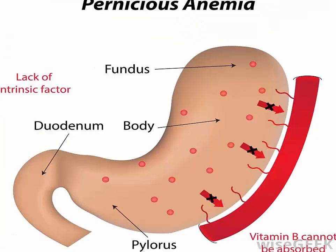People who have pernicious anemia cannot absorb enough B12 from their food. This is because they lack intrinsic factor, a protein made in the stomach. A lack of this protein leads to vitamin B12 deficiency. Extremity numbness is associated with B12 deficiency or pernicious anemia. Vitamin B12 deficiency anemia is a low red blood cell count due to the lack of vitamin B12. Anemia is a condition in which the body does not have enough healthy red blood cells, and the red blood cells provide oxygen to body tissues.